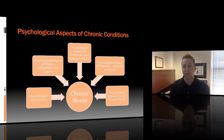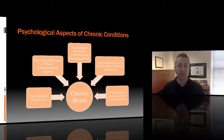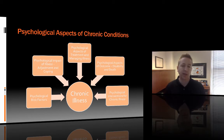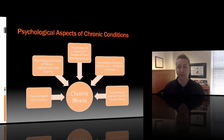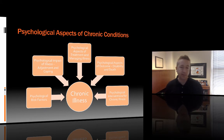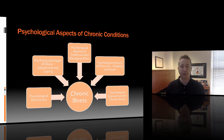Third, we can look at psychological aspects of treatment and managing illness — how people approach treatment, adhere to it, and manage the waxing and waning of symptoms. Fourth, we can look at psychological aspects of outcomes, such as how people cope with disability or approaching death. Finally, we can look at psychological interventions for chronic illness — what we can do from a psychological standpoint to help people coping with chronic illness to live as fully as possible.